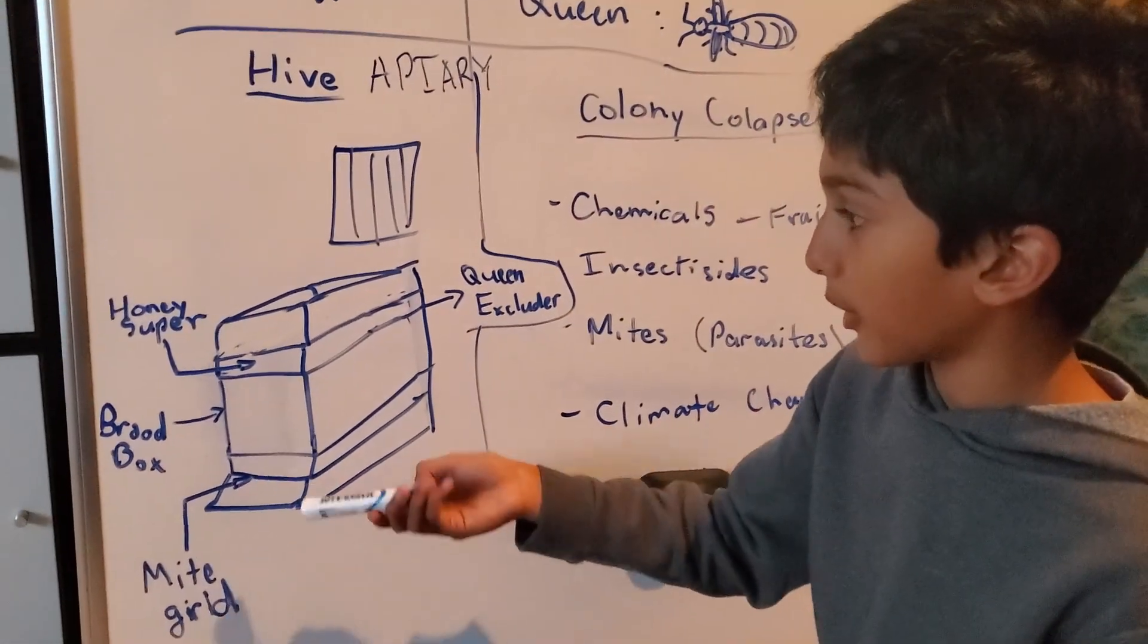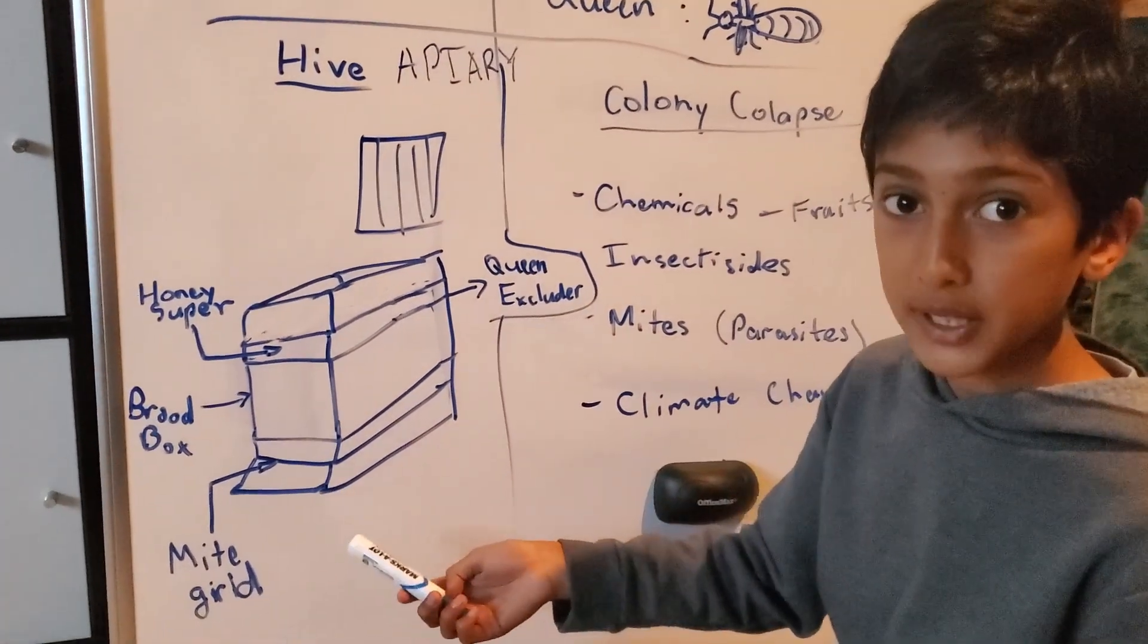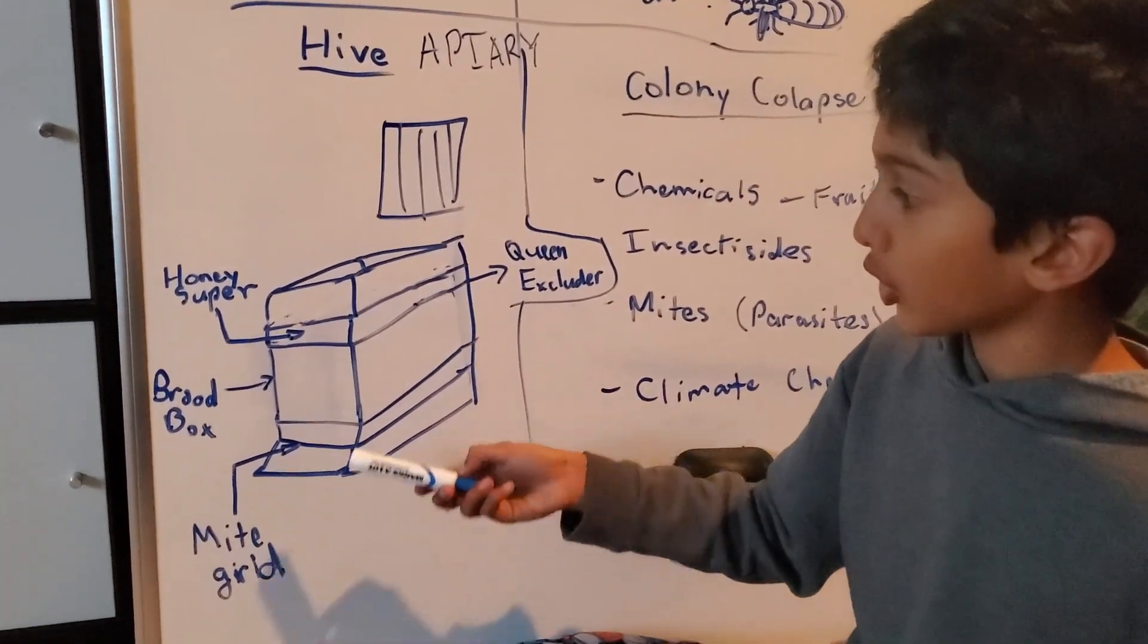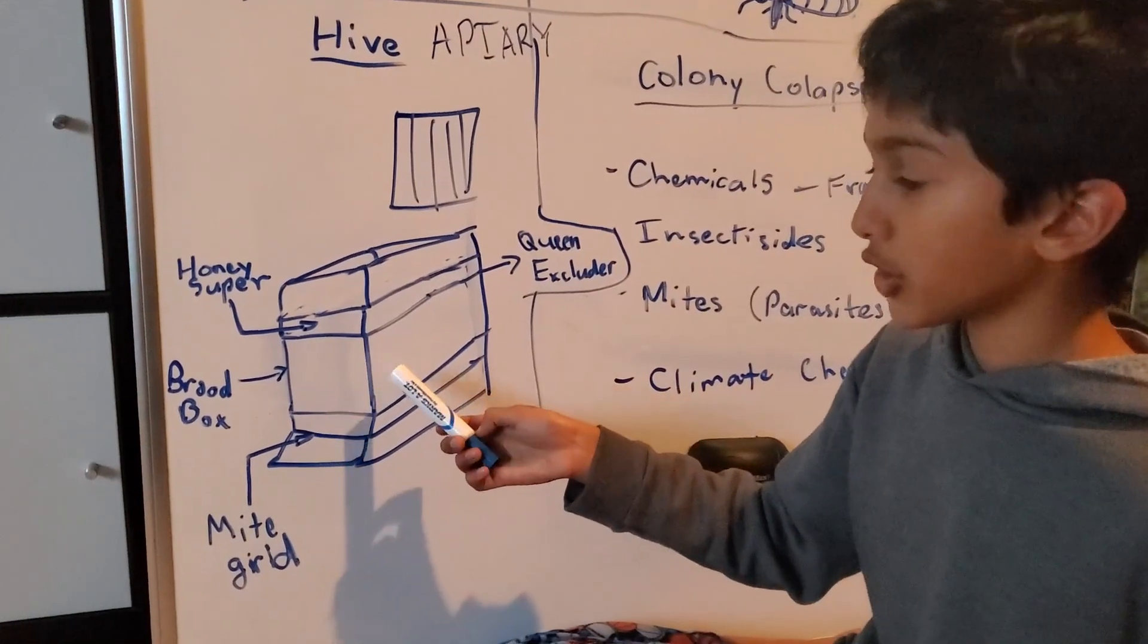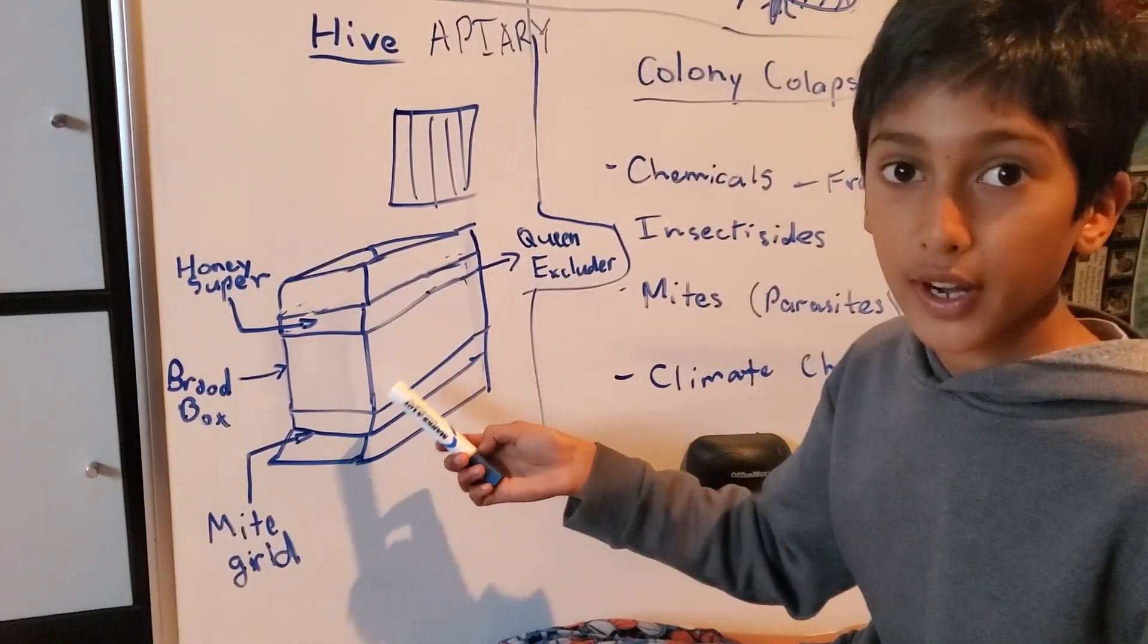Let me explain to you about the components of a beehive. First, we've got our main brood box, which is where the queen is and lays her eggs.